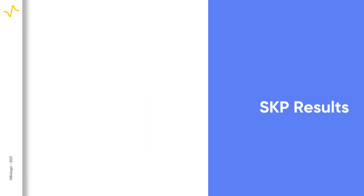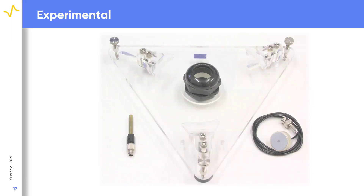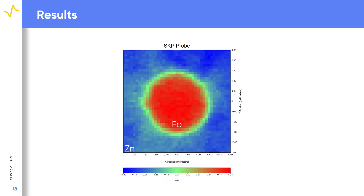What sort of results are expected when an SKP experiment is performed? The parts required to perform a measurement of the iron-zinc test sample are shown. Aside from the sample, these are the 500 micron SKP probe and the tricell without the glass body in place. The measurement area was selected to cover the entire exposed iron region. The exposed iron can be seen to have a higher contact potential difference than the zinc layer, as expected due to the higher corrosion potential of iron compared to zinc.